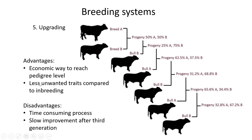Upgrading also ensures fewer unwanted traits compared to inbreeding because you use different bulls from the same breed - generally unrelated individuals. The disadvantages are that it is time consuming, taking several years for your herd to look like the desired breed. There is also generally slow improvement after the third generation. Mathematically, the proportion of the desired breed increases - from 50/50 to 75%, then higher - but you will never reach zero Hereford or 100% Afrikaner. As time goes by, less and less new alleles are added.